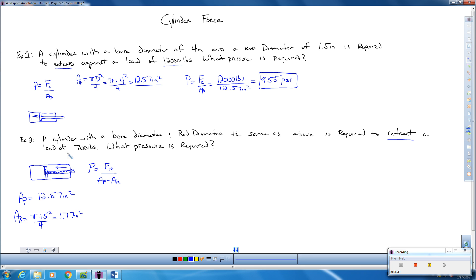We know the retracted force is 700 pounds. So I can go ahead and plug in right here. This is going to be 700 pounds divided by the area of the piston, which is 12.57 inches squared minus the area of the rod, which is 1.77 inches squared.